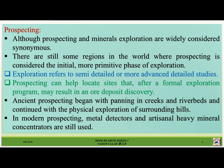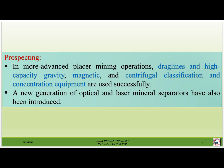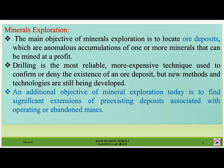Ancient prospecting began with panning in creeks and river beds and continued with the physical exploration of surrounding hills. In modern prospecting, metal detectors and artisanal heavy mineral concentrators are still used. In more advanced placer mining operations, draglines and high-capacity gravity, magnetic, and centrifugal classification and concentration equipment are used successfully. A new generation of optical and laser mineral separator operators have also been introduced.